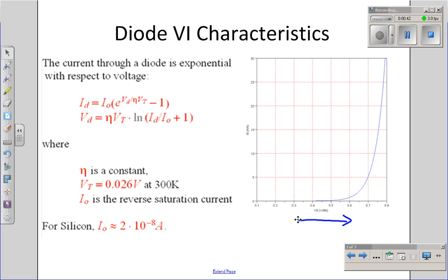The constant I0 is the reverse saturation current. That's the current I get through a diode when I try to force current through it backwards. Typically, for silicon, it's about 2 times 10 to the minus eighth amps. V sub d is the constant nu, which is roughly 2 for silicon, times V sub t, about 26 millivolts at 300 Kelvin.